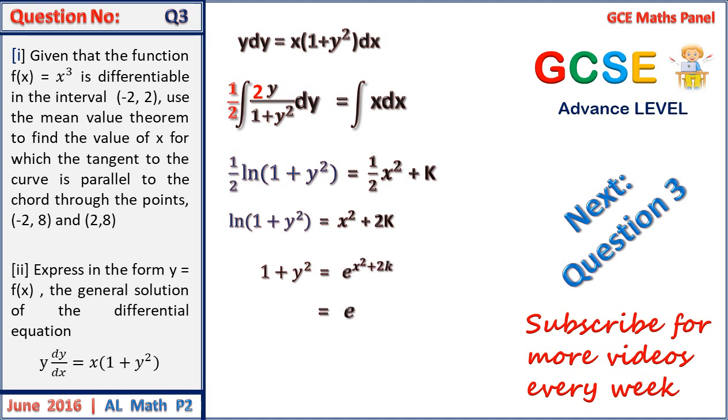And simplifying using the laws of indices, you have e to the x squared times e to the 2k. e to the 2k is actually another constant which we can replace by lambda, that will give us lambda e to the power x squared. And y will be equal to the square root of that value minus 1, where lambda is an element of the set of real numbers.